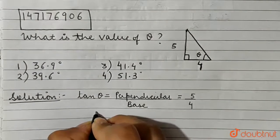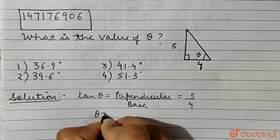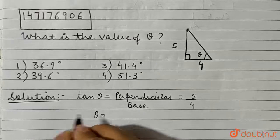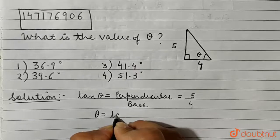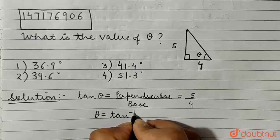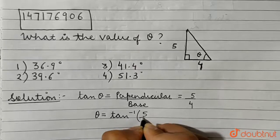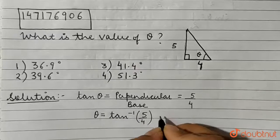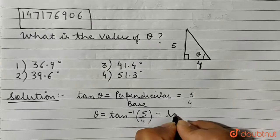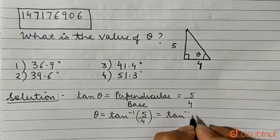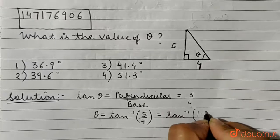So in order to calculate theta, we have theta equals—we apply the inverse function and we obtain that theta equals tan inverse of 5 by 4, which is tan inverse of 1.25.